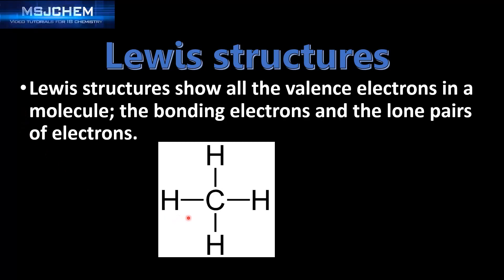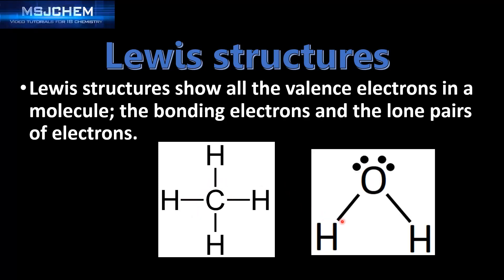Here's an example of the Lewis structure for methane. These straight lines represent a single covalent bond. And here's the Lewis structure for a water molecule — we have two single covalent bonds and also two lone pairs of electrons on the oxygen atom.